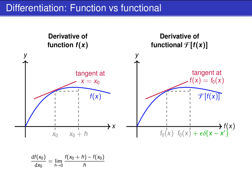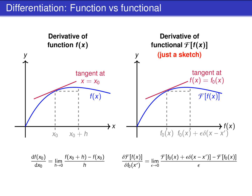Instead of a step size h, we now add a function to the function lowercase f0 to vary it. The added function is epsilon times the Kronecker delta of x minus x'. A definition for the functional derivative is shown below the right plot. The functional derivative is defined by an infinitesimal difference quotient, analogous to the definition of the derivative of a function.